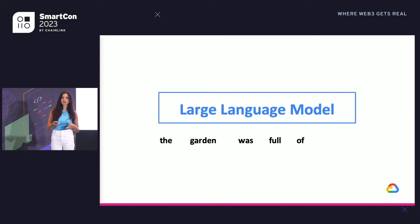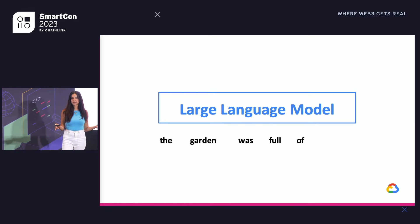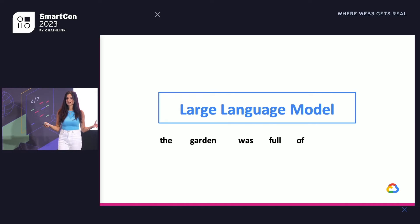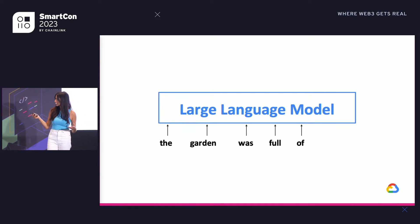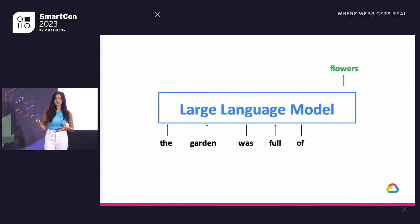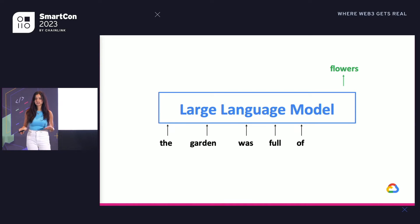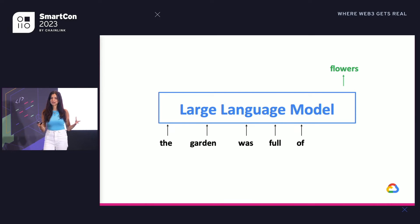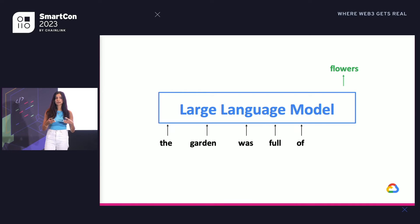What is a large language model? Large language models learn about patterns in language from the vast amounts of text data that they're trained on. They take as input some text and produce output text that's likely to follow. One way you might hear people talk about this is large language models as a very sophisticated autocomplete — similar to the technology that's been in your phone for many years, just infinitely better. And while completing a sentence like 'the garden was full of flowers' is not particularly interesting, we can get these models to take on all sorts of interesting behaviors by writing strategic input text.